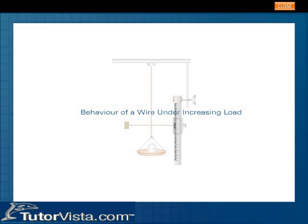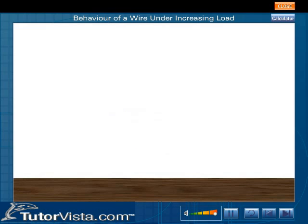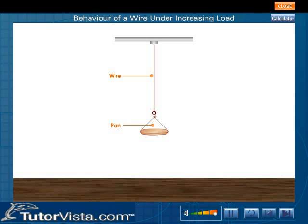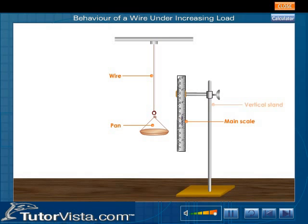Let us study the extension of a wire under increasing load by performing an experiment. Take a long straight wire of uniform cross-section. Suspend the wire from a rigid support and attach a pan at the other end. Fix the main scale to a vertical stand. The extension of the wire is measured using a vernier arrangement.